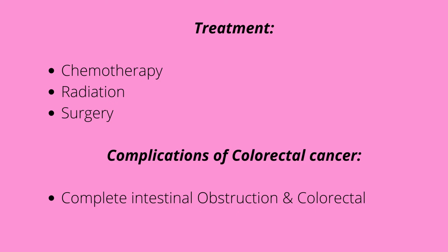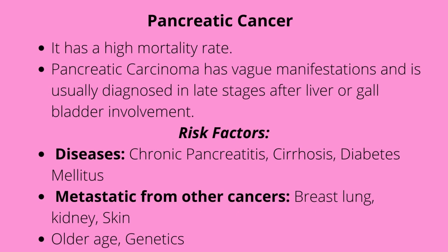Let's talk about pancreatic cancer. With pancreatic cancer, it has a very high mortality rate because it's not really detected early. Any type of cancer that has a high mortality rate has a poor prognosis. Pancreatic carcinoma has a vague manifestation and is usually diagnosed in late stages after liver and gallbladder involvement, and that involvement of other parts of the GI system makes it a very high mortality cancer.